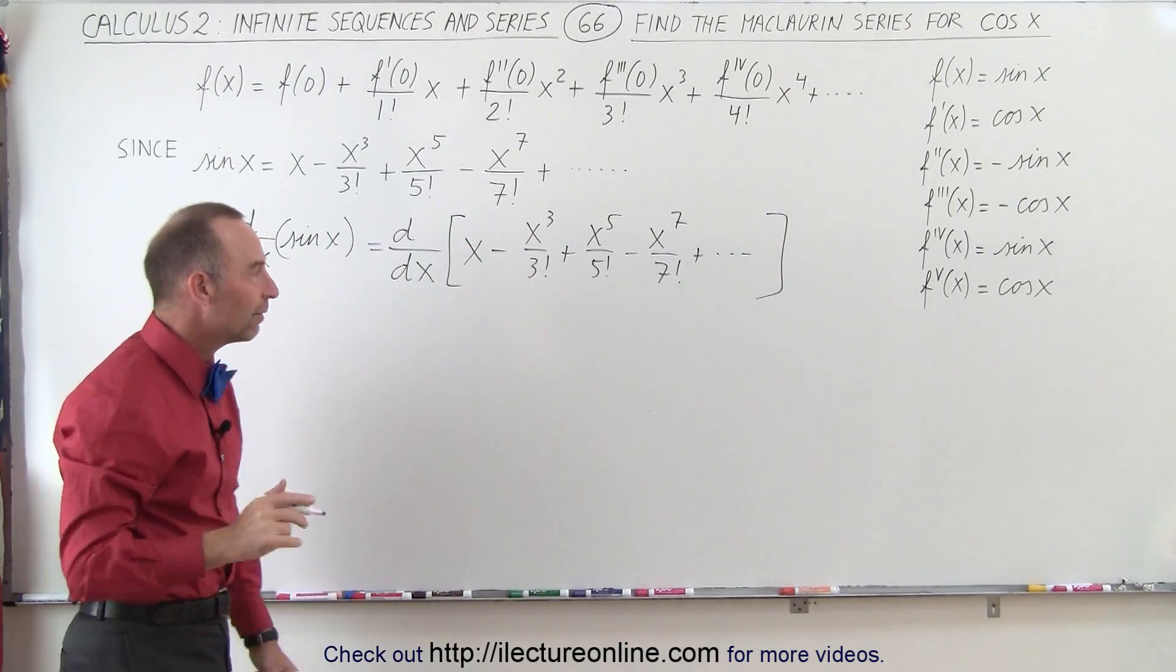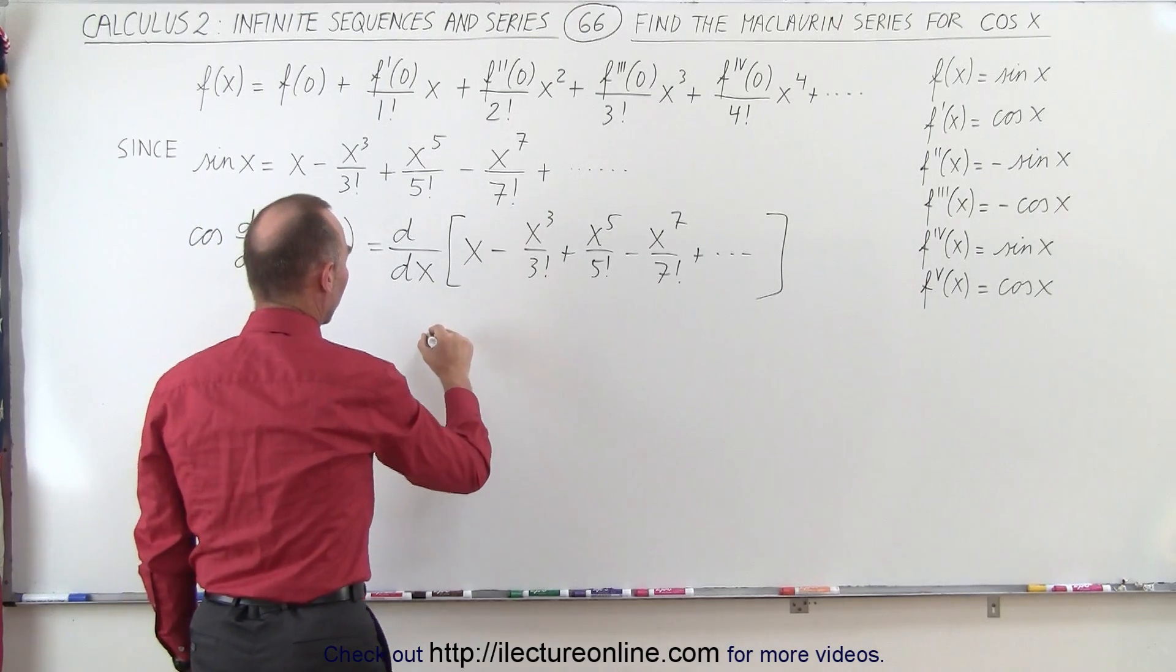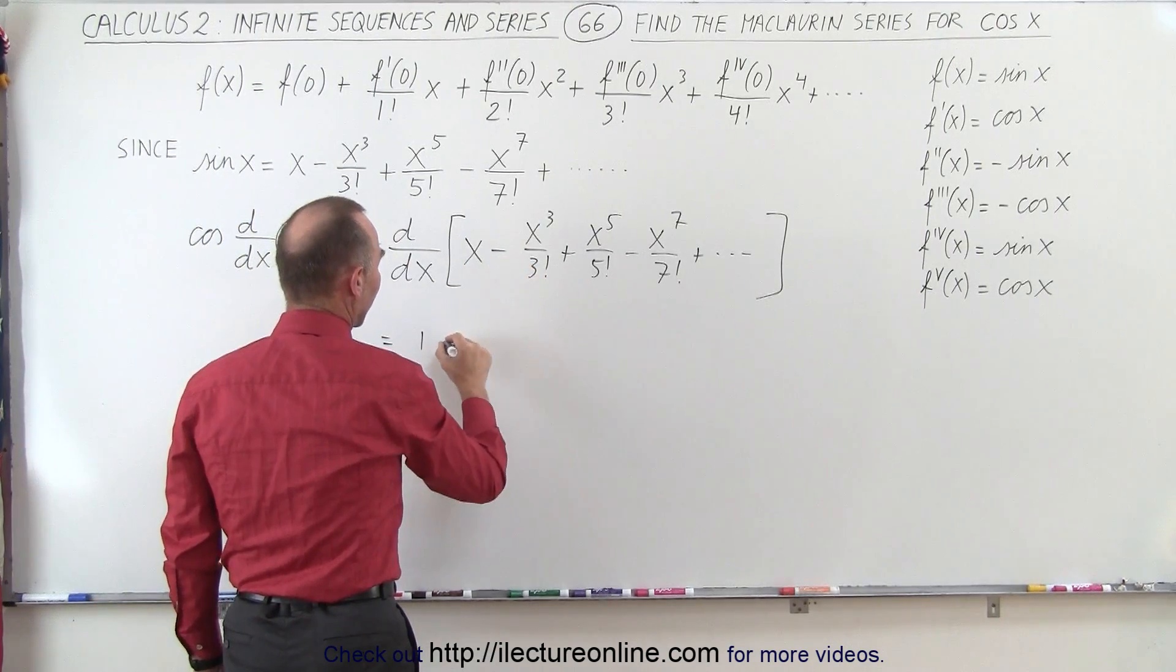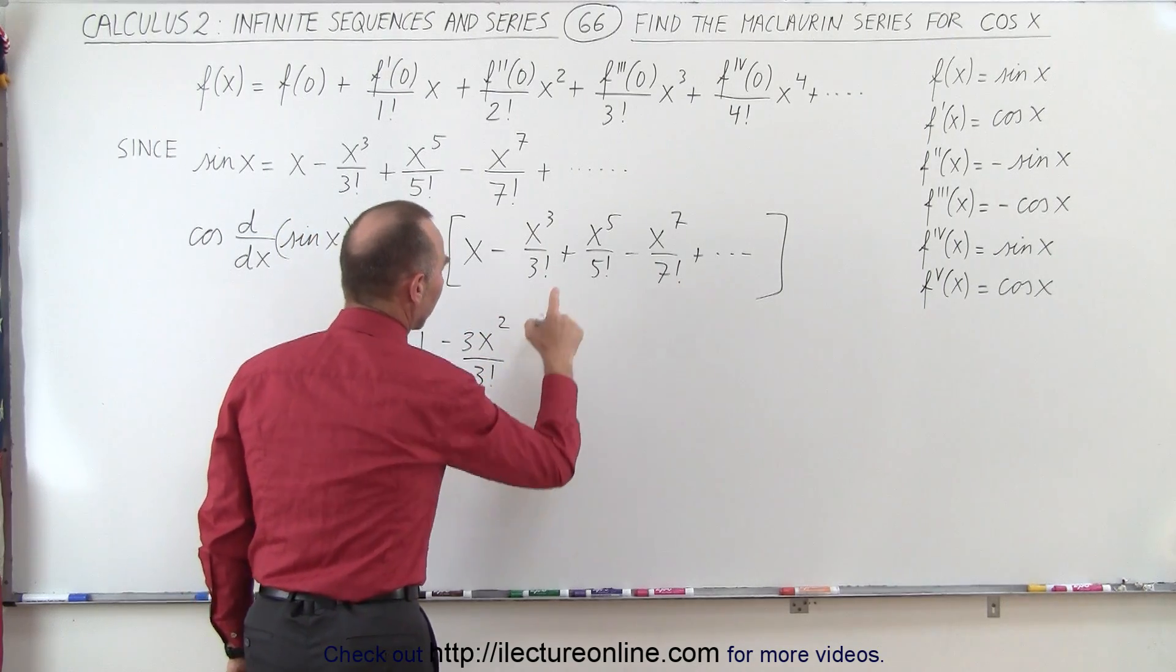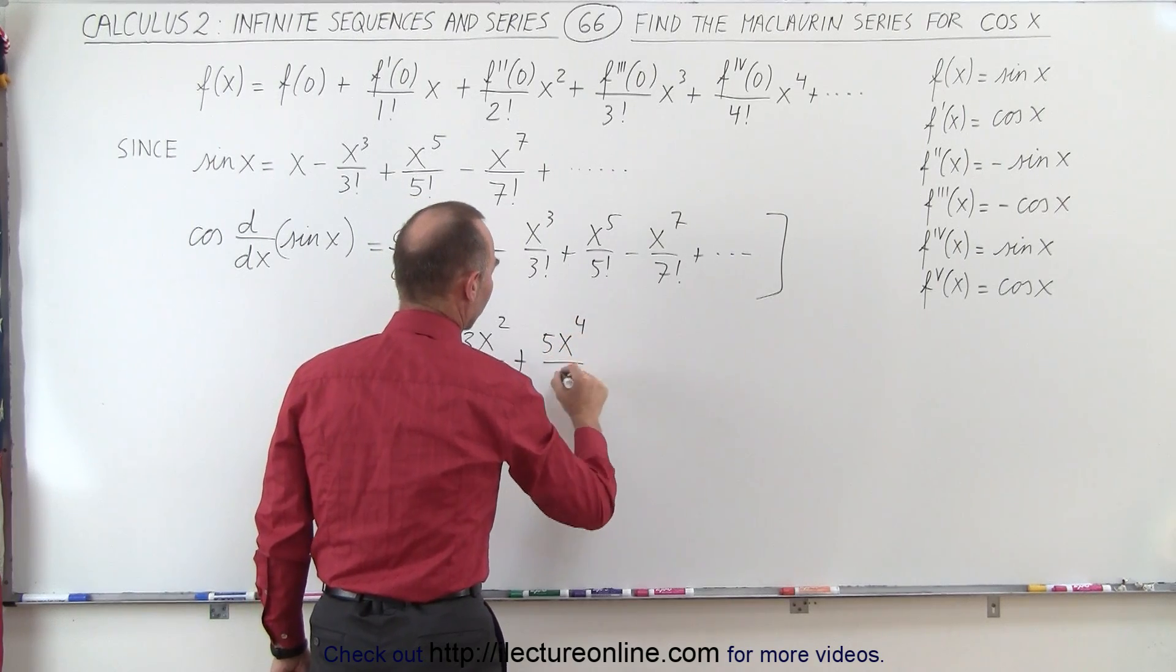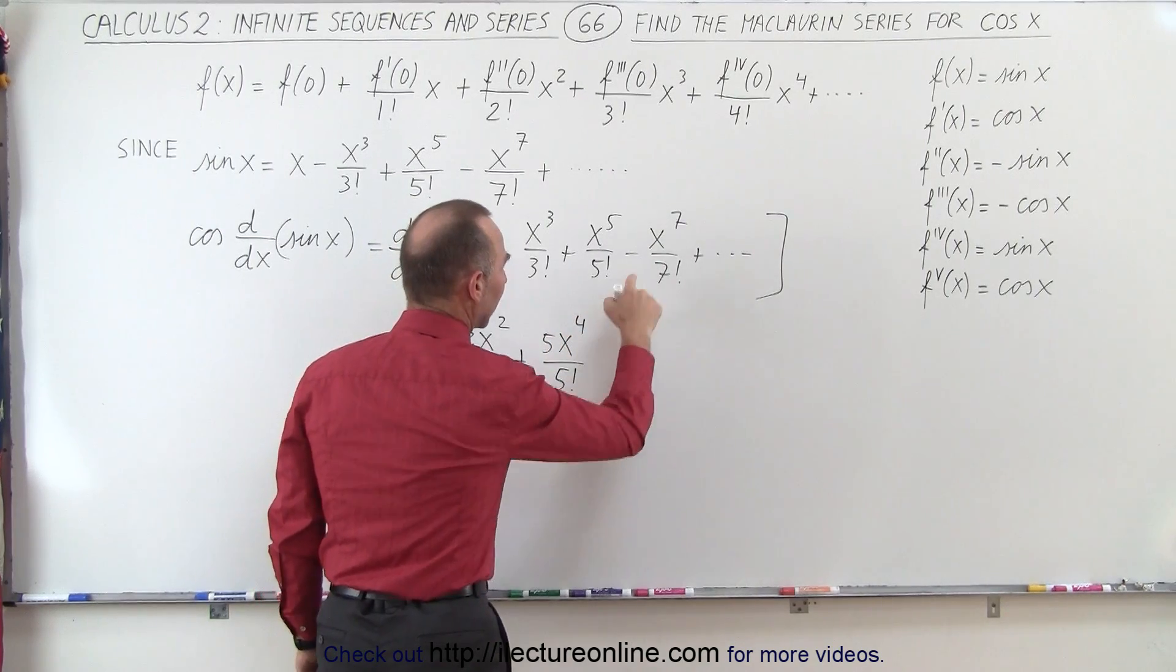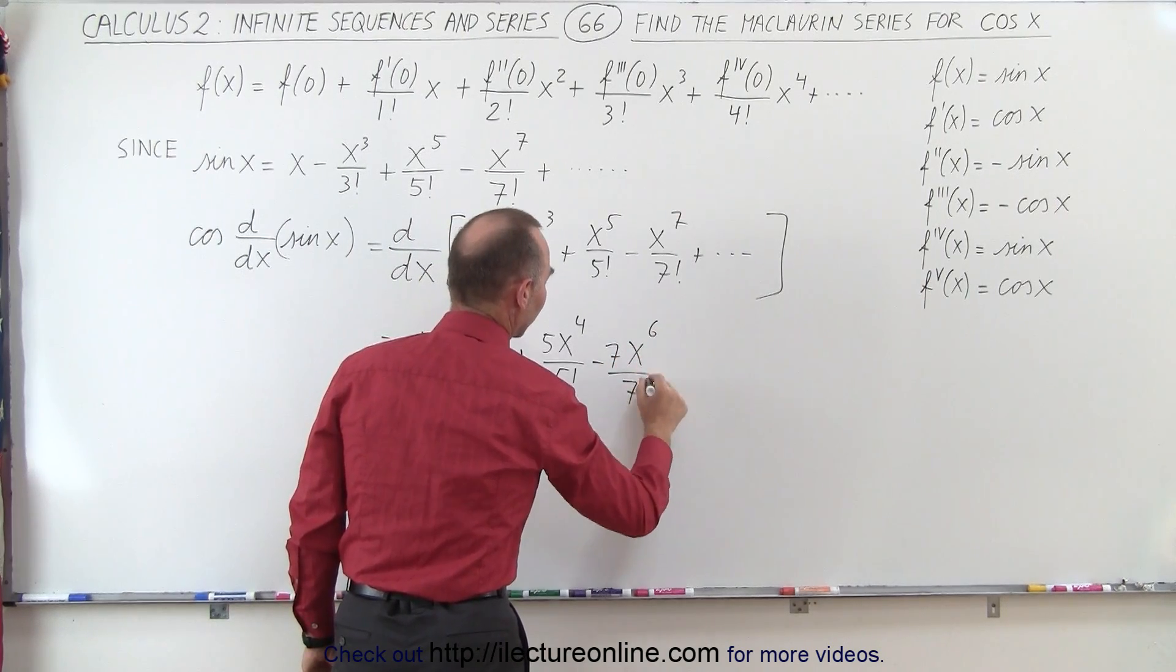Now we're going to take the derivative of each one of those terms. The derivative of the first term is simply 1. The derivative of the second term is minus 3x²/3!. And here we get plus 5x⁴/5!. And here we get minus 7x⁶/7!.